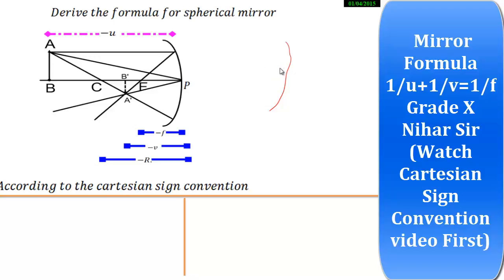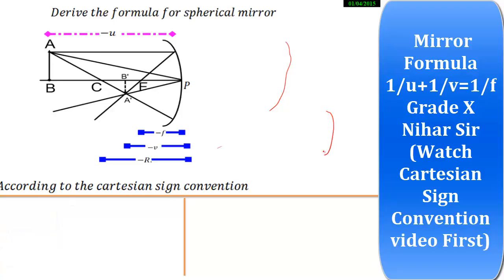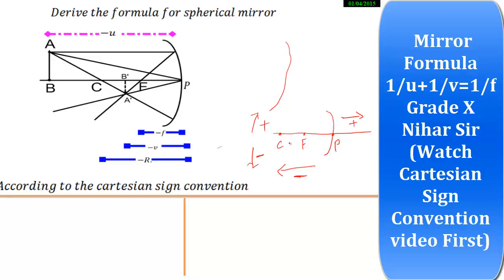Suppose this is my concave mirror and this is my principal axis. It's C, it's F, it's P. According to Cartesian sign convention, all measurements to the left side are considered negative, upward direction positive, downward direction negative, and the right side positive. If you know these four things, you can understand this mirror formula better.